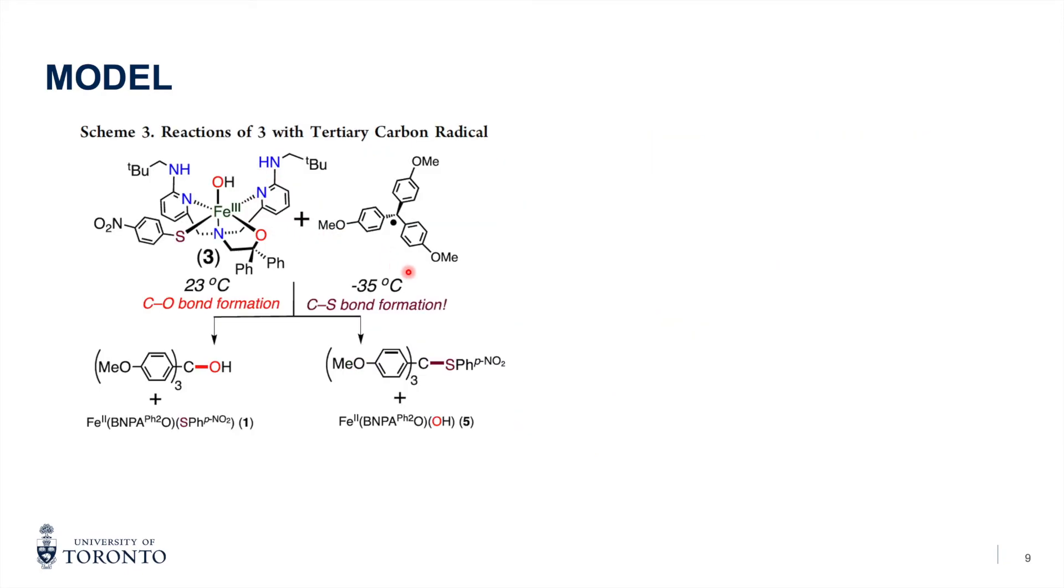So they reacted the model complex with a tertiary carbon radical, under different temperature conditions, 23 degrees and minus 35 degrees. And they found that in the higher temperature, a CO bond formation is favored. Whereas in minus 35 degrees, the CS bond formation is favored.